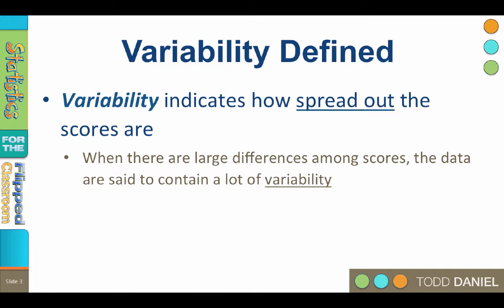Variability indicates how spread out the scores are, how much the scores differ from each other. When there are large differences among the scores, the data are said to contain a lot of variability.